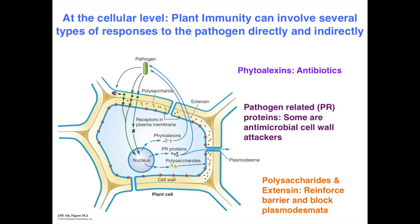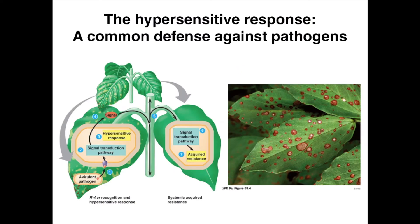Finally, we can get an enhanced production of polysaccharides and extensins — components of the cell wall. These will help reinforce the cell wall and can block off plasmodesmata, essentially preventing the pathogen from moving from one cell to the next. Overall, we get this signaling between plants and pathogens that can induce several different cellular responses as a way to protect against pathogen infection.